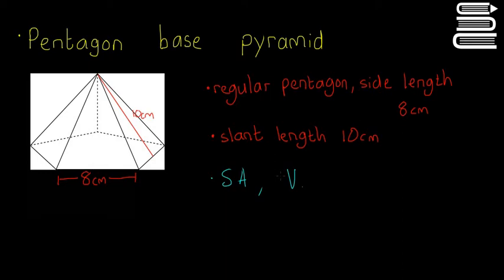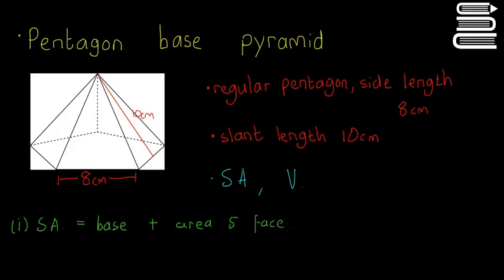Just one thing I'll say: in an exam question they wouldn't just ask you straight out for the surface area or the volume — they'd probably ask you a few smaller questions first that'll lead you in the right direction, some hints to make it a little bit easier. So I'll start off by looking for the surface area. The surface area equals the area of the base plus the area of the five faces.